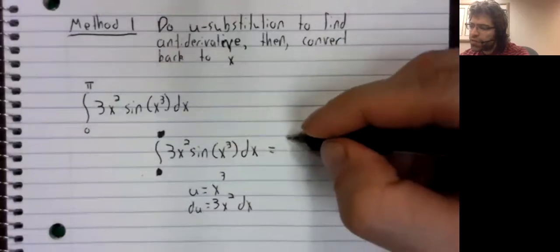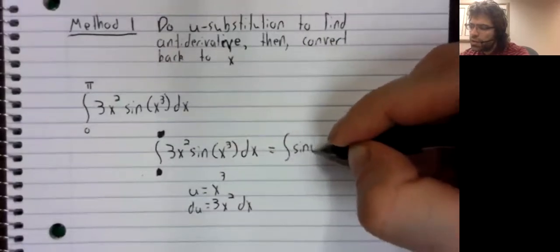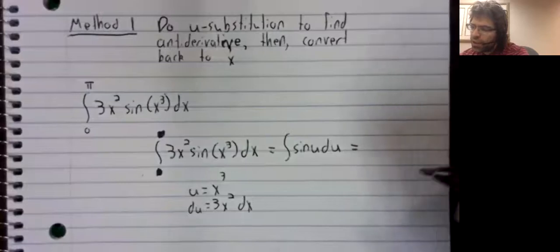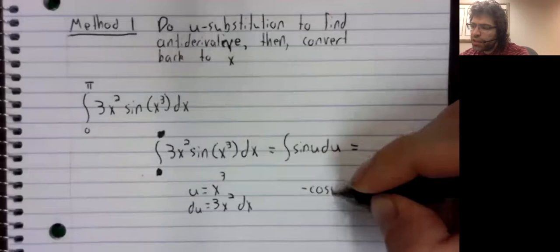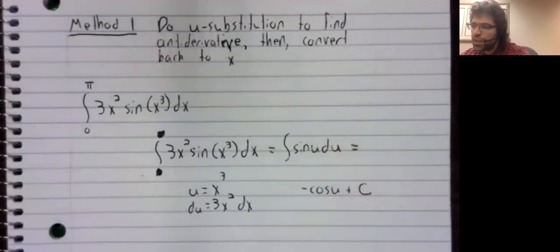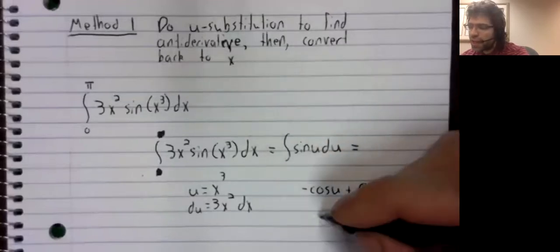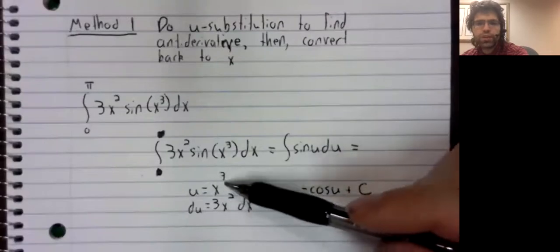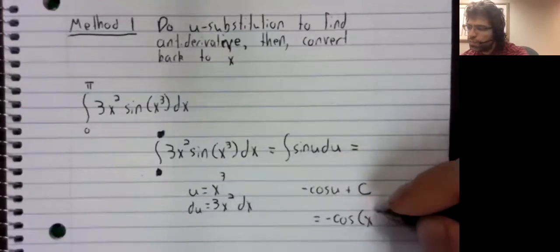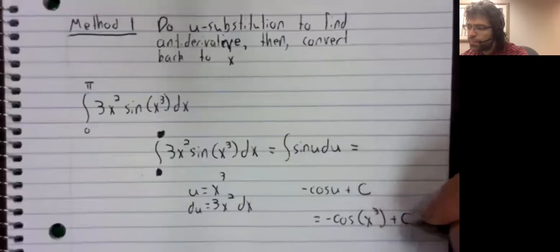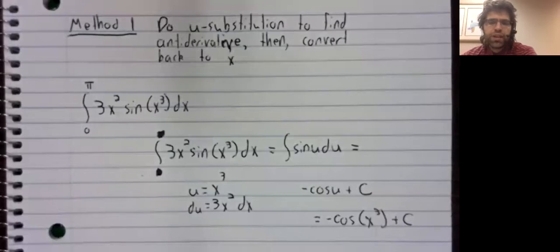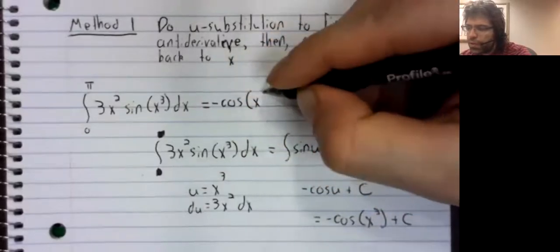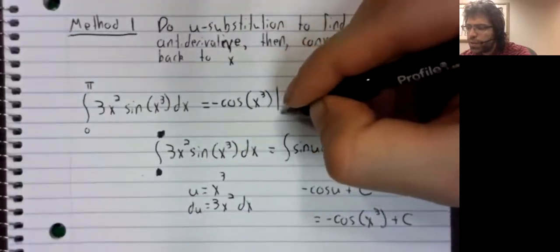We'll let u be the inside function, du is 3x squared dx. So we can convert everything into u. The anti-derivative of the sine is the negative cosine. And then we convert back to x, the negative cosine of u, which is x cubed.